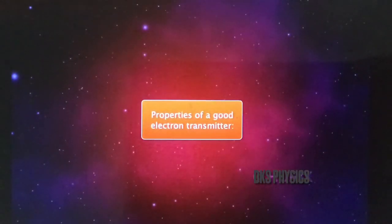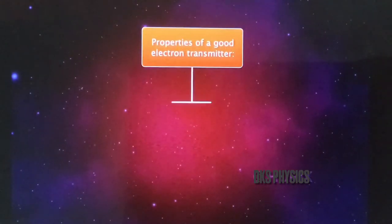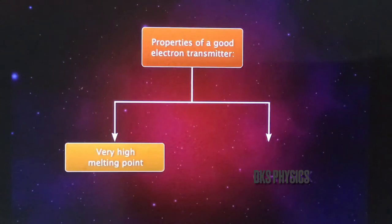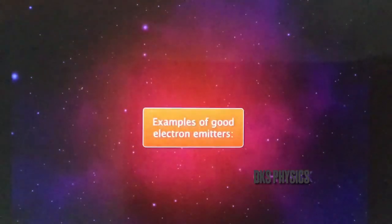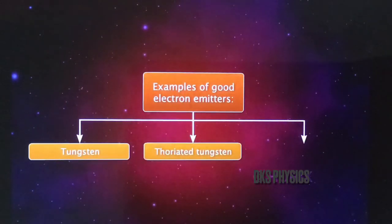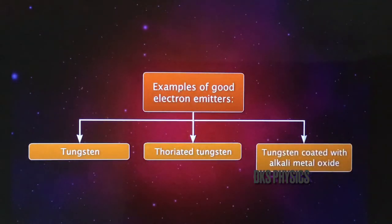A metal having a very high rate of emission of electrons can be used as an electron emitter. A good electron emitter should have two properties: a very high melting point and a low work function. Some good electron emitters are tungsten, thoriated tungsten, and tungsten coated with alkali metal oxide.